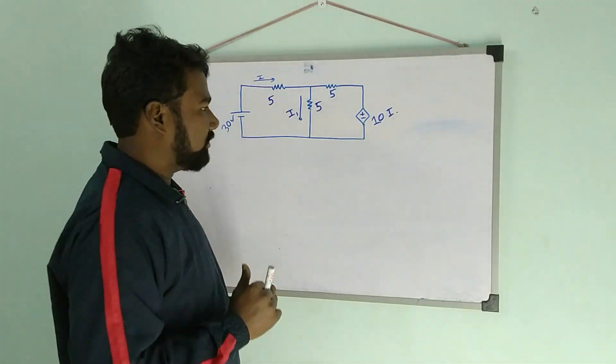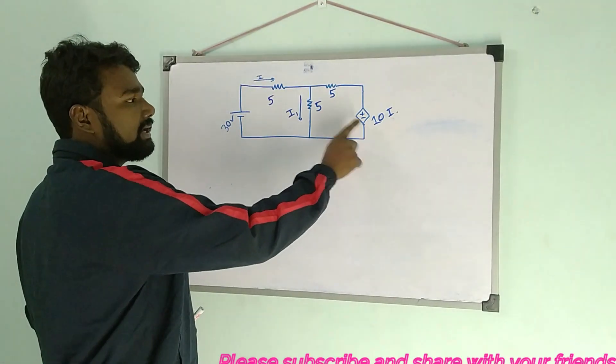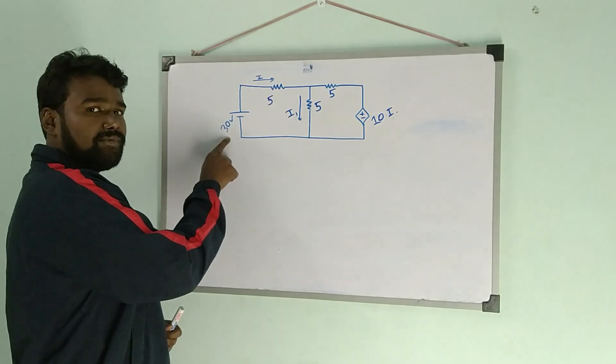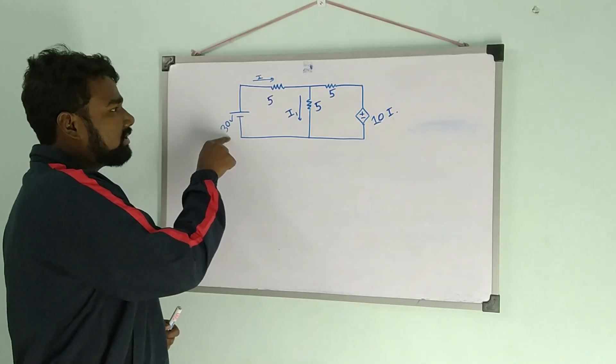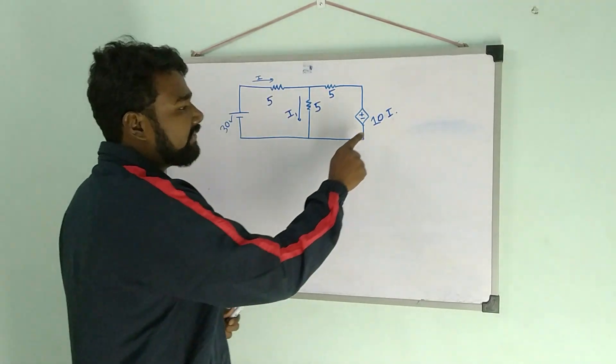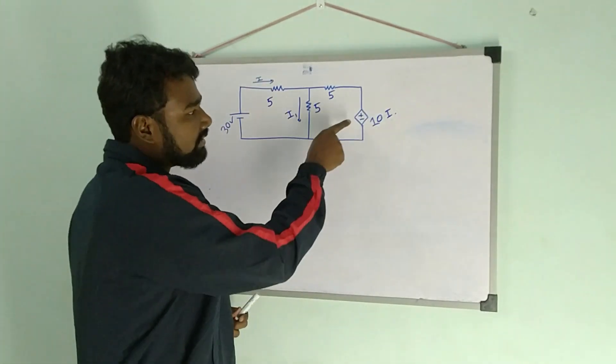What is a dependent voltage source? Here we see that this is an independent voltage source and this is a dependent voltage source. Independent voltage source means the value is 30 volt, and the value of this voltage source is independent of any other circuit parameters.